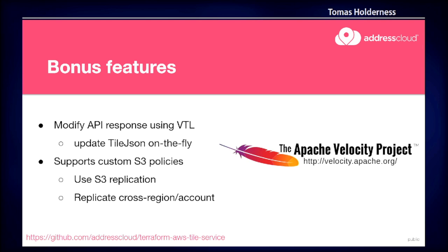A couple of bonus features that come out of the box with API Gateway: it supports Velocity Template Language, which is an Apache project, which means we can do really interesting things like rewriting our tile JSON on the fly. So if we've got different environments — a dev, staging, and prod environment — we don't know what the URL of the tile set is going to be until runtime, so we can inject that into our tile JSON using API Gateway on the fly. We can also do custom S3 policies, including S3 replication across different regions around the world to support a multi-regional approach.